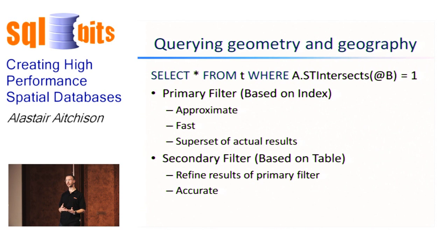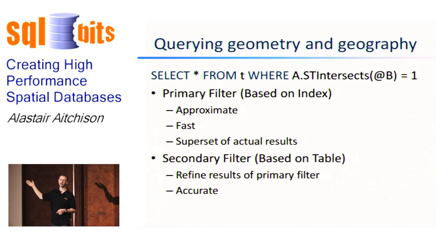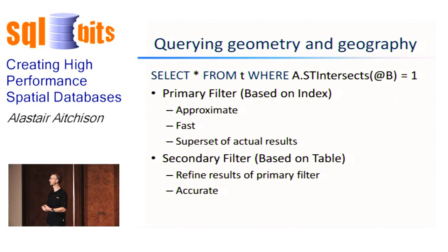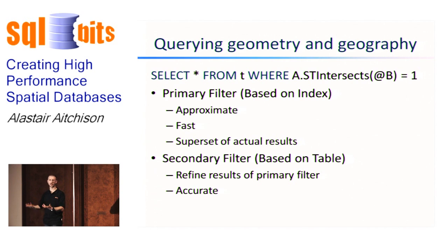When you normally write a spatial query, it's quite common for A to be a column in your table and B to be a parameter supplied to the method — a fixed search region. For instance, if we were looking to find points of interest located in Wales, A contains points of interest, and the B parameter supplied is a polygon representing Wales. So you select all rows from the table that intersect that polygon.